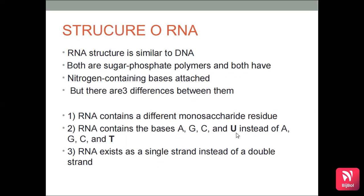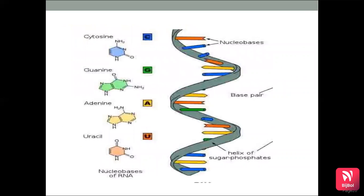In DNA we have adenine, guanine, cytosine and thymine. In RNA we have adenine, guanine, cytosine and uracil. So A, G and C are similar, but uracil replaces thymine. Additionally, RNA exists as a single strand instead of a double strand — this is how RNA differs from DNA.